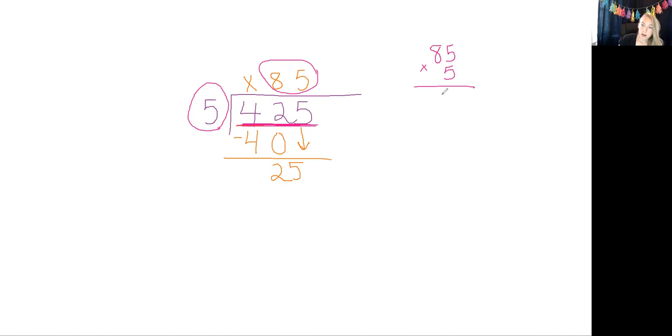So 5 times 5 is 25. We're going to carry our 2 up here. And then 5 times 8 is 40. And then we have to add this 2, so 41, 42. And we get 425.